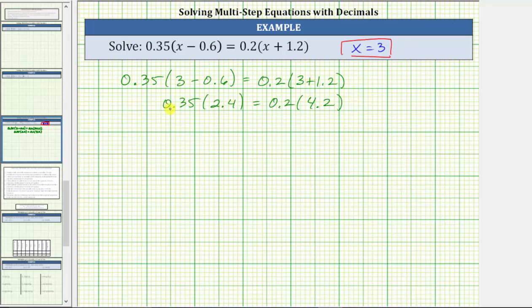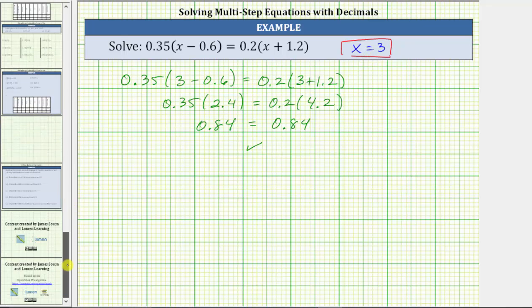Going back to the left we multiply 0.35 times 2.4 is 0.84. On the right 0.2 times 4.2 is also 0.84. Because we have a true statement, this verifies the solution x equals 3 is correct. I hope you found this helpful.